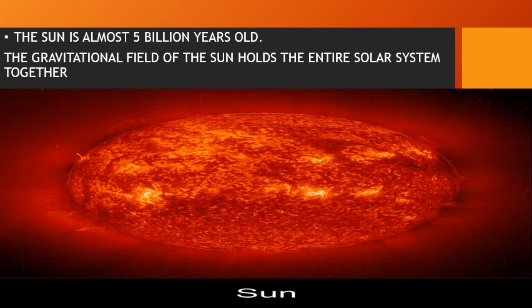The sun. The sun is almost 5 billion years old. The gravitational field of the sun holds the entire solar system together. The sun is made up of hot gases, mainly helium and hydrogen. The sun is the primary source of heat and light for living beings on earth. Life on earth is possible because of its optimum distance from the sun — that is, the earth is neither too far from the sun nor too close to it.